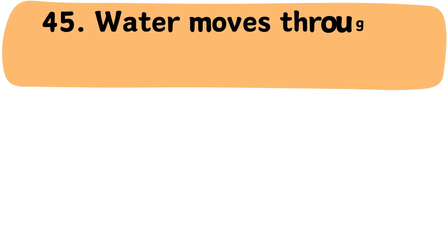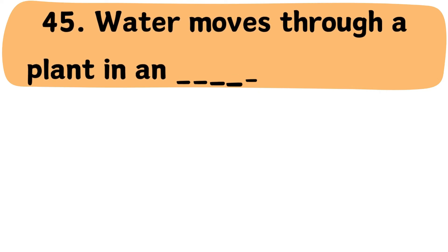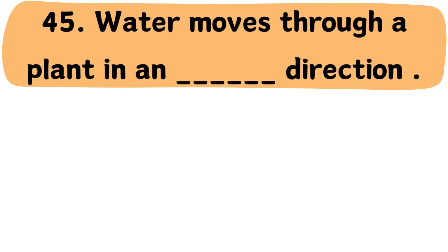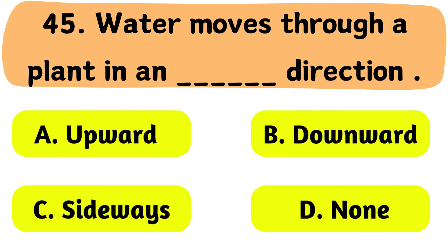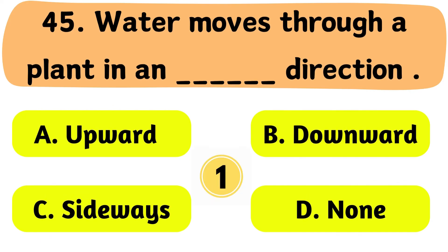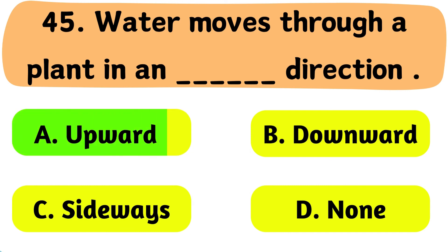Question No. 45: Water moves through a plant in which direction? A. Upward. B. Downward. C. Sideways. D. None. The correct answer is Option A: Upward.